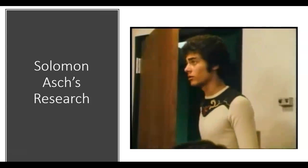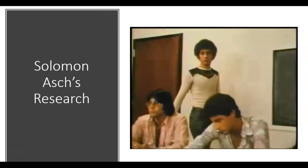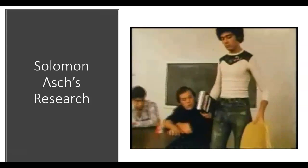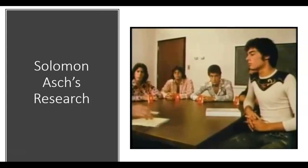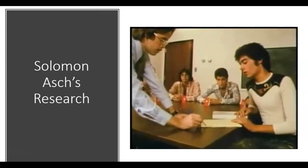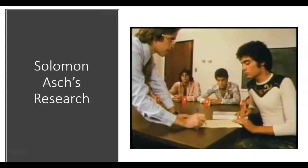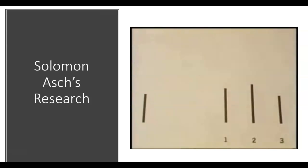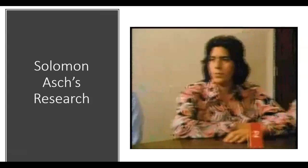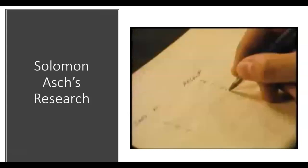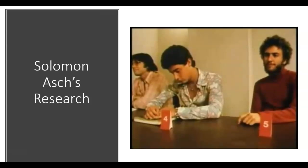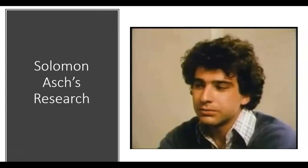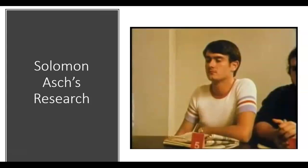Sometimes we go along with a group because what they say convinces us they are right—this is informational conformity. But sometimes we conform because we are apprehensive that the group will disapprove if we are deviant—this is normative conformity. In another variation, the subject was told to write his answers privately. Subjects exposed to the same misleading information but immune from group criticism showed conformity drop by two-thirds. Asch's experiment reveals how people will deny what they see and submit to group pressure, and allows us to study the conditions that increase or reduce its occurrence.